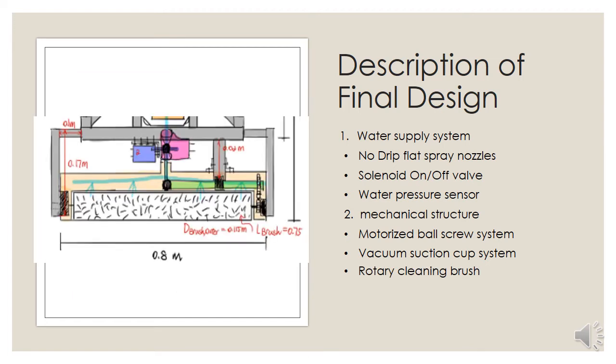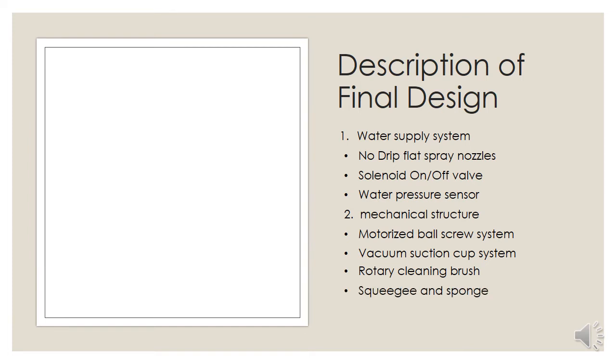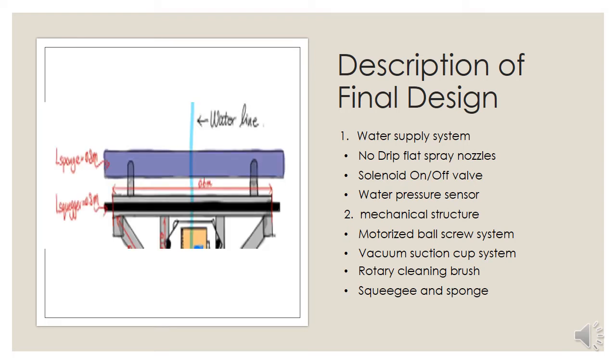Next, at the bottom of the machine is the rotary cleaning brush. The brush shaft is powered by the driving motor through 1:1 pulley ratio transmission and 1:1 ratio gear system. On the other hand, on the top of the machine, there is one squeegee and a sponge. The squeegee can be used to wipe down the residual water on the glass. Then the sponge can clean the water lines on the glass that are left by the squeegee.